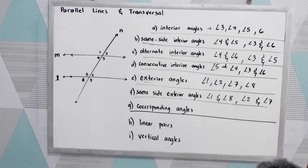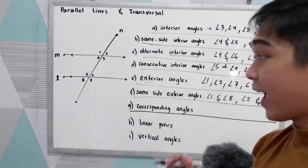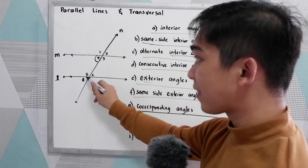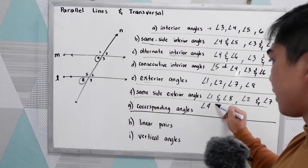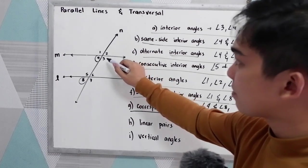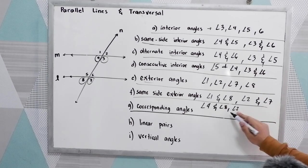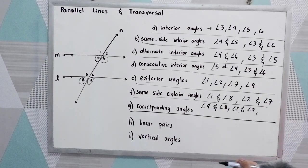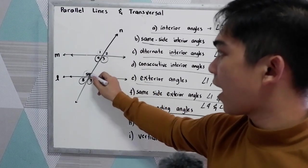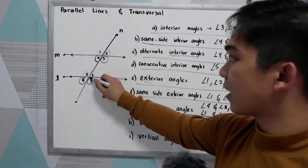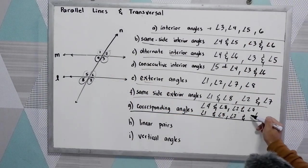Next, corresponding angles. When we say corresponding angles, there is 1 interior and 1 exterior. So we have angle 4 and angle 8, angle 2 and angle 7, angle 1 and angle 5, and angle 2 and angle 6.